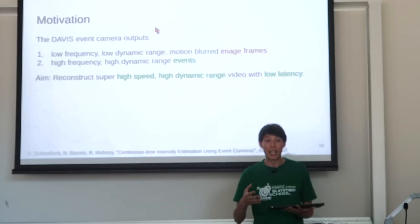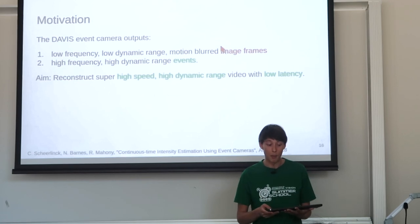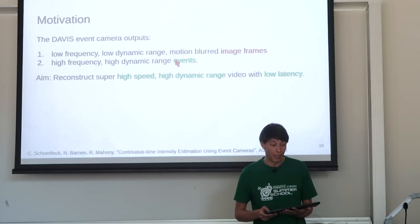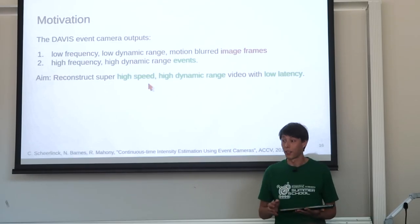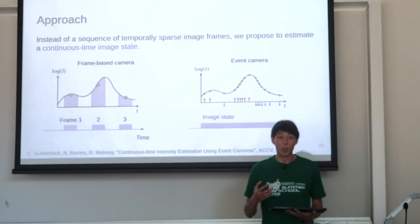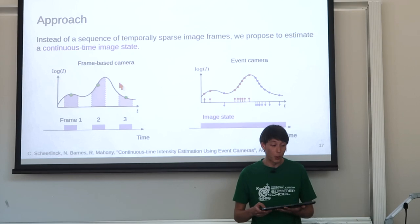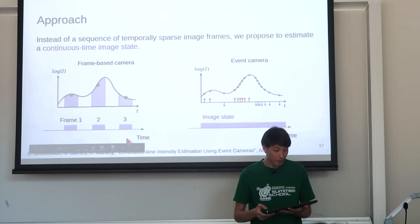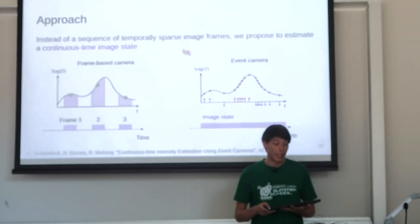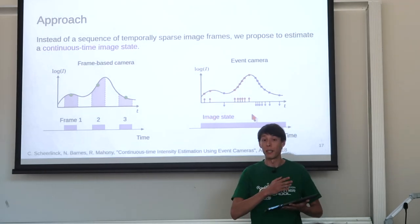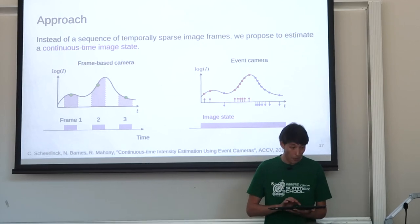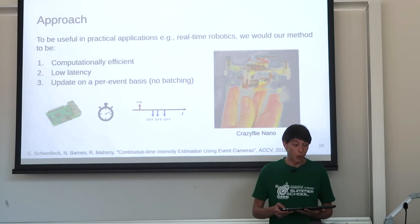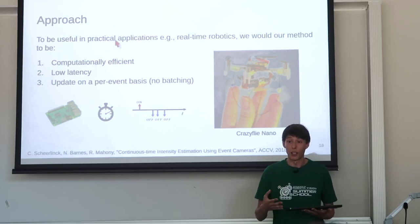Our goal with the DAVIS event camera was to reconstruct a high-speed, high-dynamic-range video with low latency. Instead of outputting images at discrete times like a normal frame-based camera, we propose estimating a continuous-time image state valid for all time, driven by incoming events.